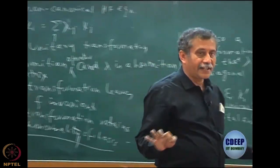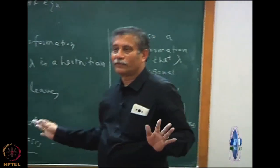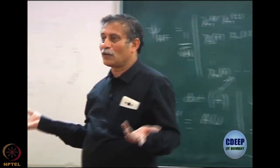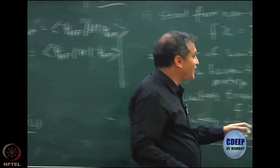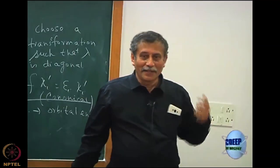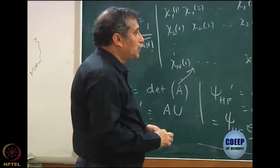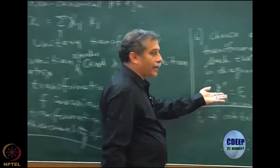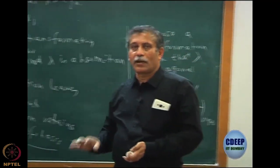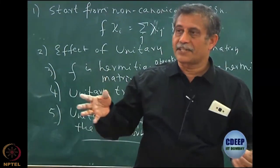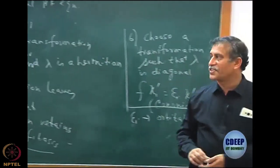I hope all of you realize that canonical and non-canonical Hartree-Fock are identical — there is no difference. From now on, whatever Hartree-Fock we discuss is canonical Hartree-Fock. I will not write the prime anymore. The canonical Hartree-Fock equation will be F|χ_i⟩ = ε_i|χ_i⟩, and we will then look at the physical interpretation of this canonical equation and the orbital energies.